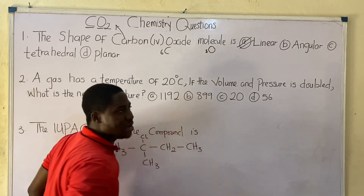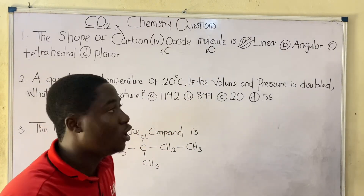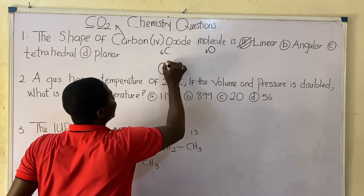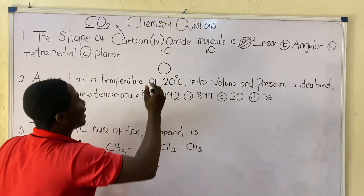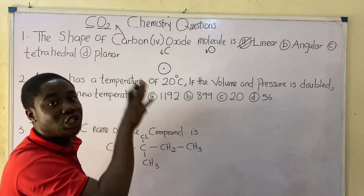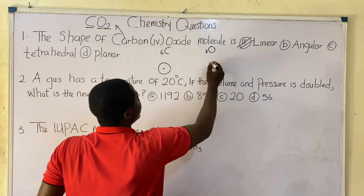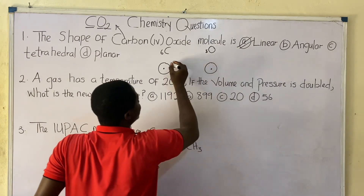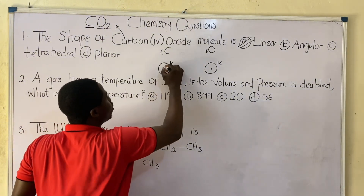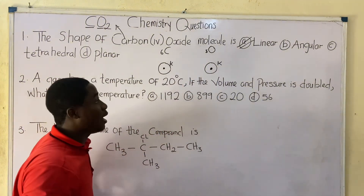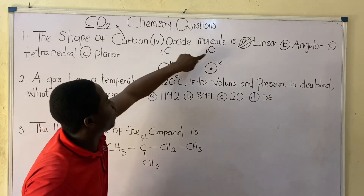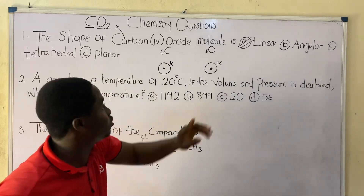Next, we draw the diagrammatic representation showing the atom and electrons filling the shells. An atom has shells — the first shell is called the K shell, which is centrally located around the nucleus. Carbon has 6 electrons and oxygen has 8 electrons, and we fill these into the diagram.